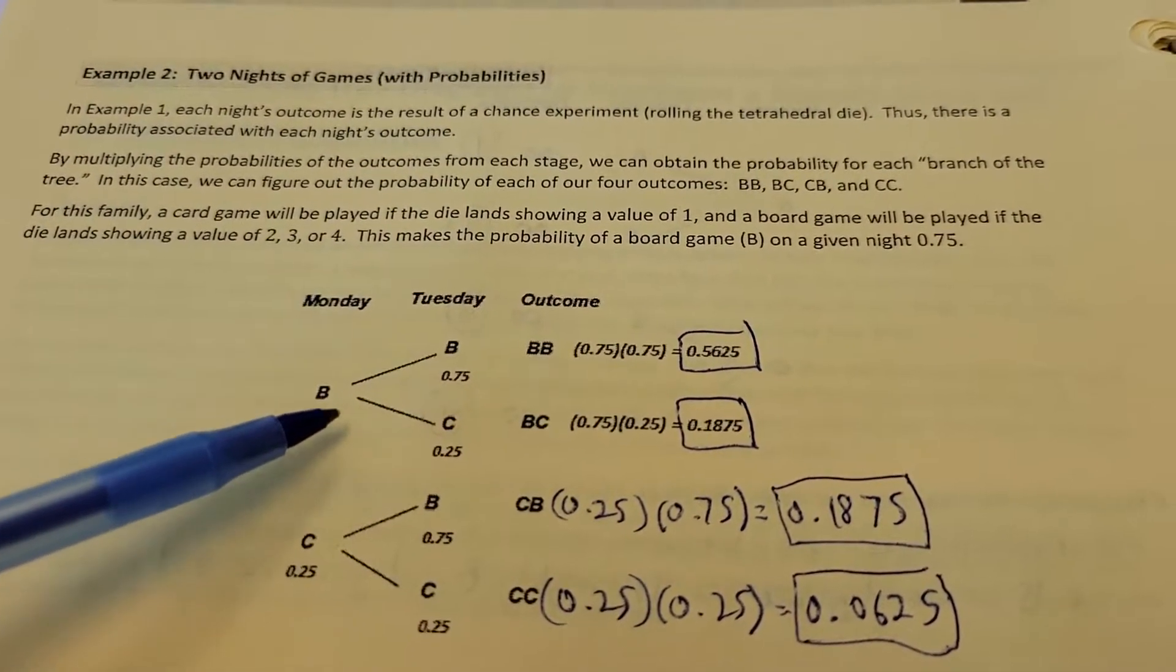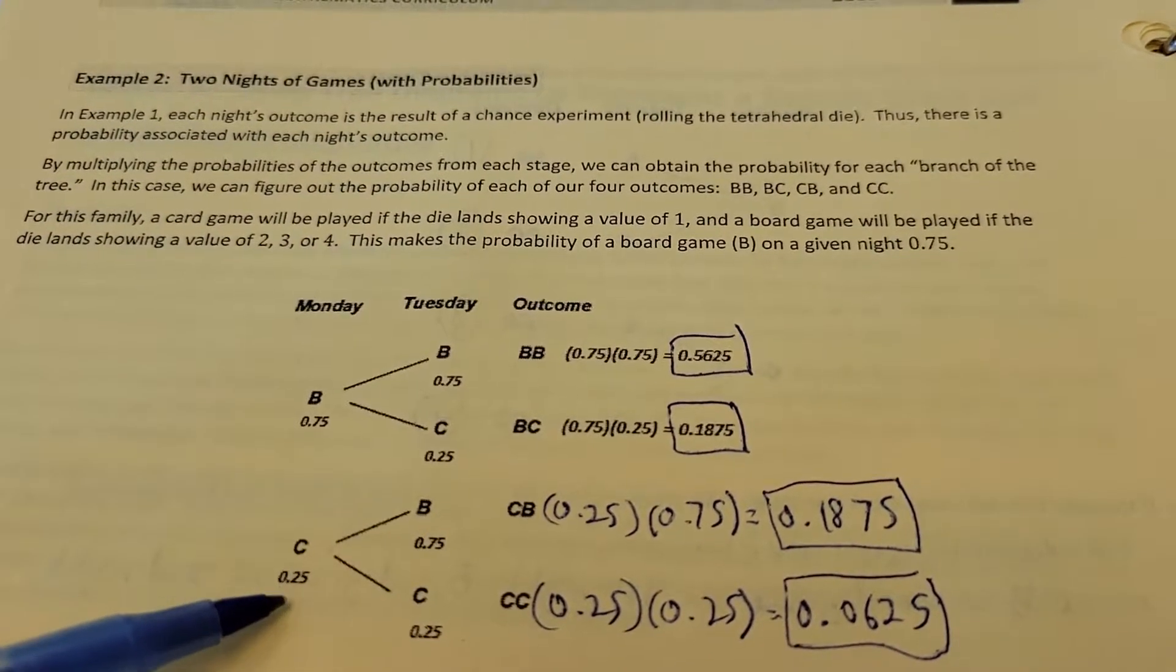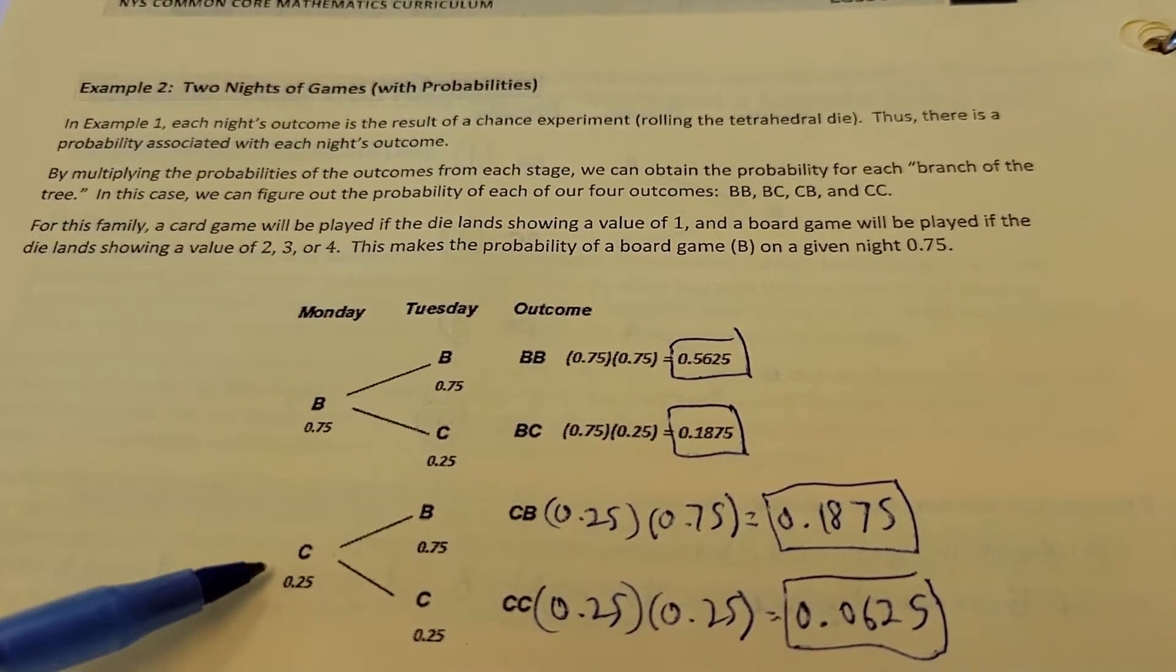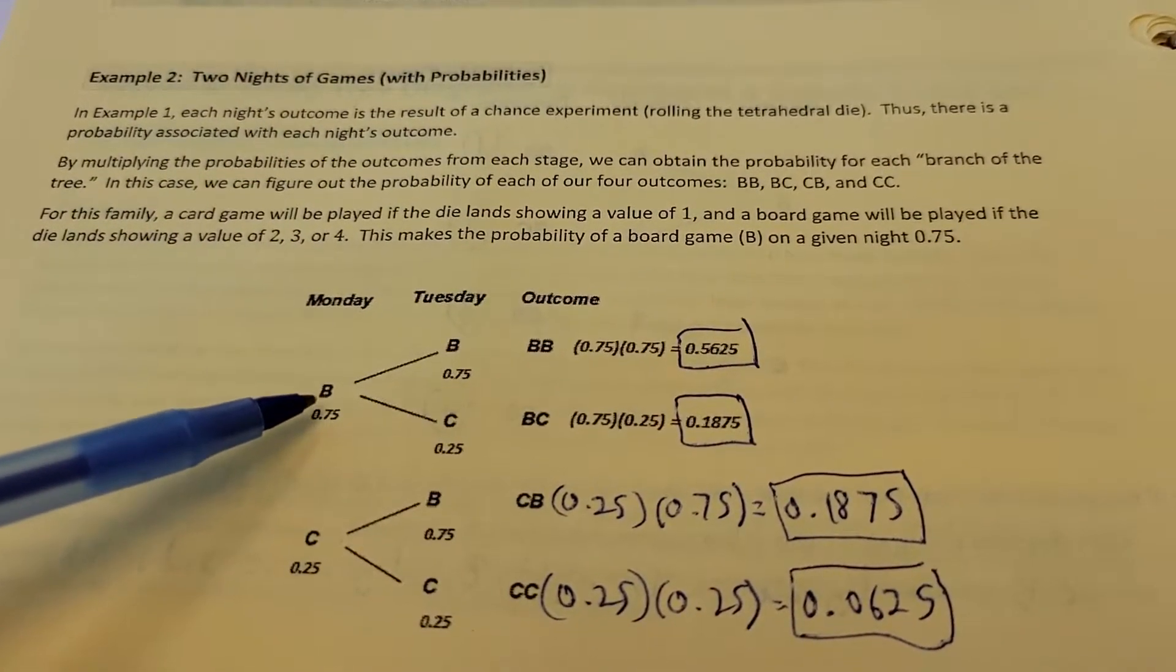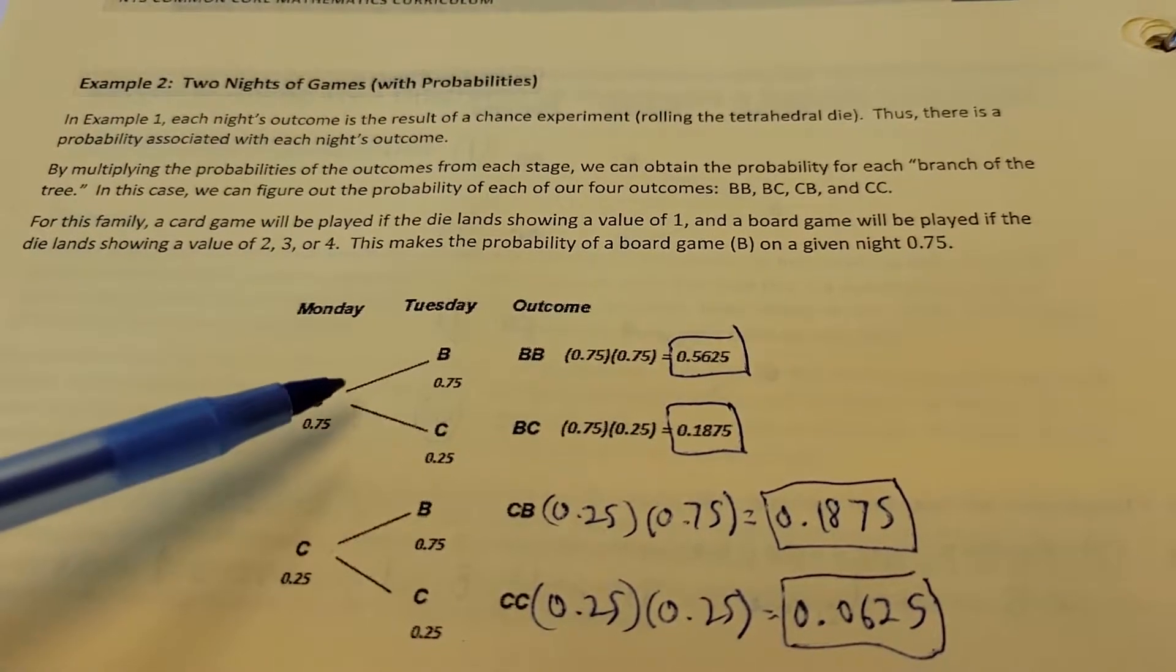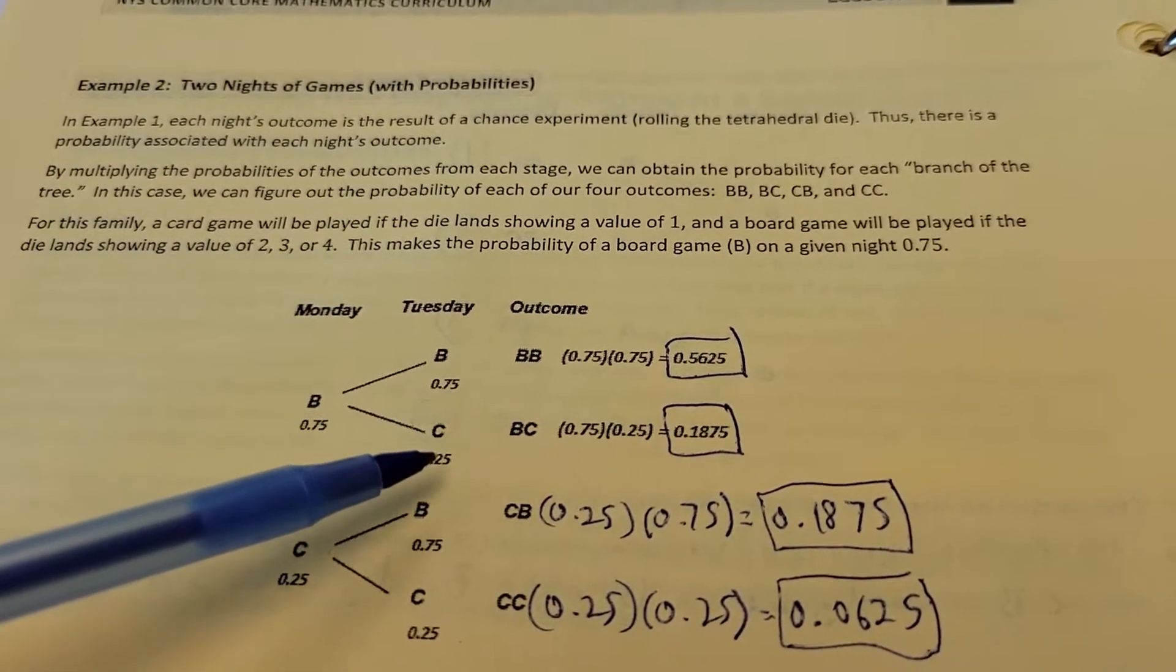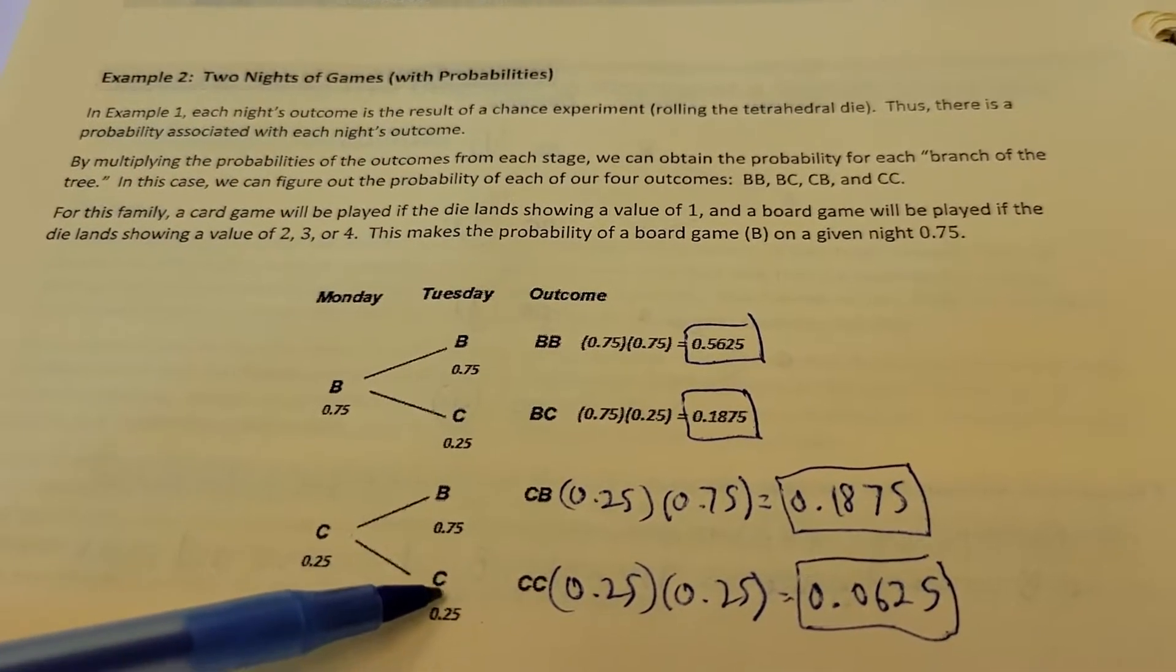Only 1 out of the 4 possibilities here will be a chance to play a card game, and then 3 out of the 4 possibilities you're going to be playing a board game. 3 out of 4 means 0.75, and then 1 out of 4 means 0.25. On Monday you roll, you've got 3 out of 4 chances to get board game, 1 out of 4 chances to get card game. On Tuesday, same thing. You roll again, you've got 3 out of 4, 0.75 chances to get a board game, and 0.25 to get the card game. You can see our probabilities here.